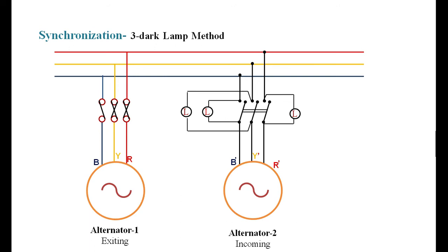One by one you have to fulfill each condition. The first condition is that the voltage of the incoming machine must be the same as the bus bar voltage. To test this, connect a voltmeter to measure the bus bar voltage, then adjust the field of the alternator such that the generated voltage equals the bus bar voltage.